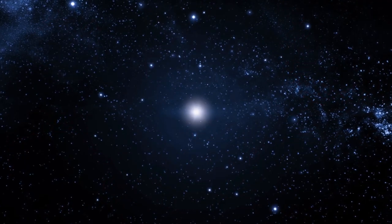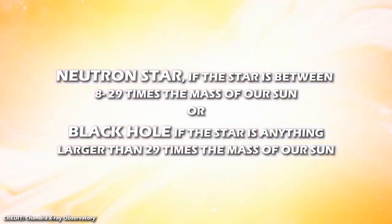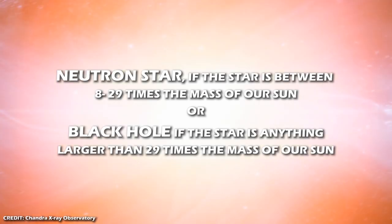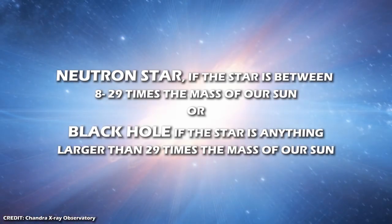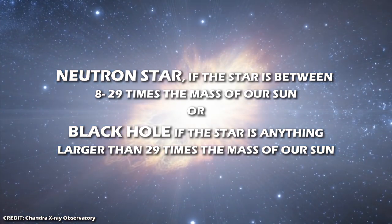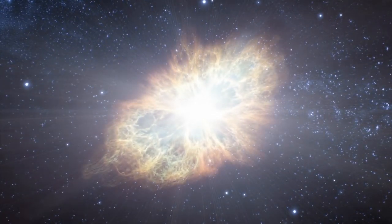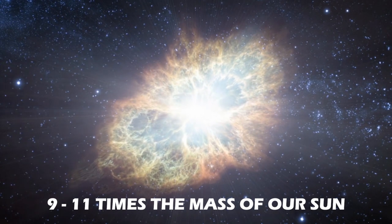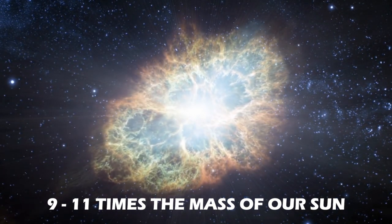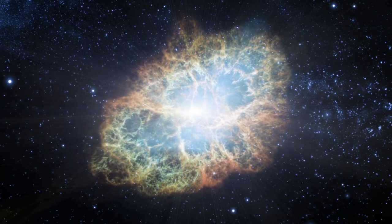Stars heavier than eight times the mass of a sun go out with a bang, leaving behind either a neutron star if the star is between 8 to 29 times the mass of our sun, and a black hole if a star is anything larger than 29 times the mass of our sun. The progenitor star that gave rise to the Crab Nebula was between 9 to 11 times the mass of our sun and hence went out with a bang, leaving behind a neutron star made up mostly of neutrons.